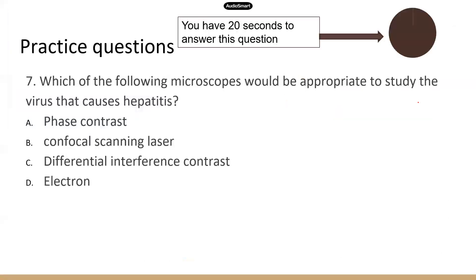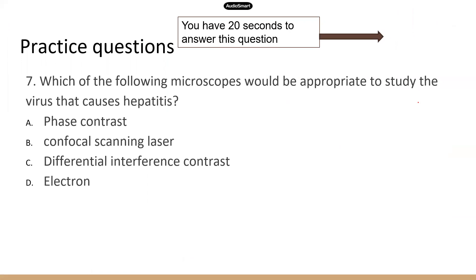Practice question: which of the following microscopes would be appropriate to study the virus that causes hepatitis? The correct answer is D — electron microscopes — because these microscopes can give you higher magnification and resolution so that you can see tiny structures as small as a virus. The other three options are types of light microscopes, and light microscopes are not good enough to look at viruses. So the answer is D.